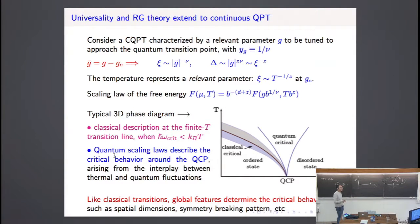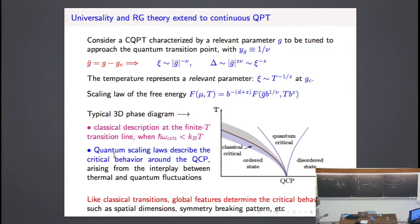As with classical critical phenomena, we can encode the critical behavior at the quantum point by writing down homogeneous scaling laws, which are very similar to those obtained for classical transitions. There is a relevant scaling field associated with g-bar, with exponent one over nu. The temperature is another relevant scaling field at this critical point, associated with the exponent z. This summarizes the power-law critical behavior — for example, the free energy.